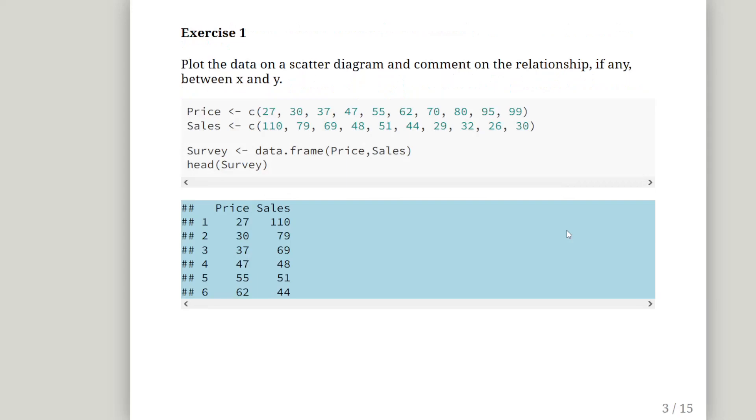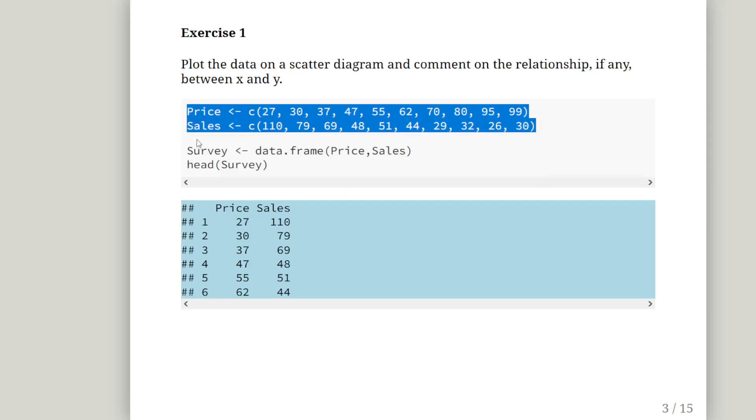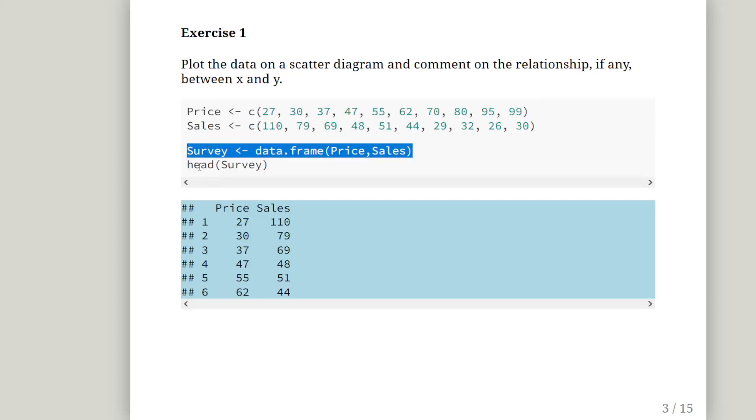So the first question is, draw the data on a scatter diagram and comment on the relationship, if any, between X and Y, sales and price. So I am going to just set these two variables up here in R. I am going to set up price, I am just going to call it price and sales, X and Y. And I am going to combine them into a single data set called survey. This is a data frame. And let us just check, do we have what we expect to have. So we have the price variable there and the sales variable there, excellent. That is the first six rows of this data frame just to check everything looks like it is in order.